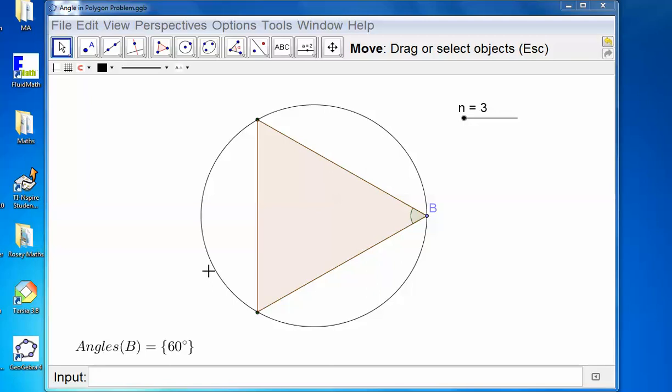So this is a problem as mentioned in my blog post from Paul Lockhart's excellent book called Measurement. And it's a problem about the diagonals of a regular polygon.